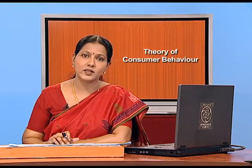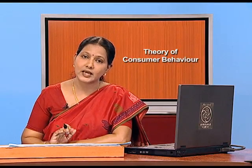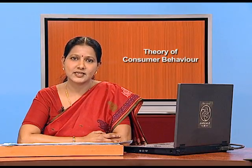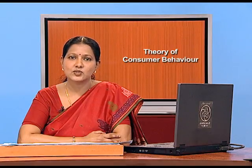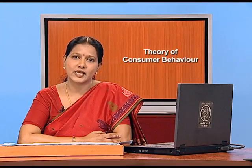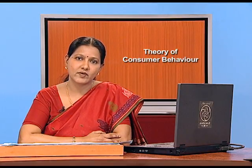You can choose to not buy biscuits or sweets and keep your 10 rupees — that is also a budget set, so (0,0) must be included. The budget set goes from (0,0) to a maximum of (0,5) — that is 0 biscuits and 5 sweets — and also (5,0) — 5 biscuits and 0 sweets. We have now learned how to form a budget set given the level of income and the prices of the commodities. In the next section, we will be dealing with how to form a budget line — how to draw a budget line when the consumer's income and prices of commodities are known. Thank you.